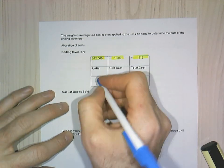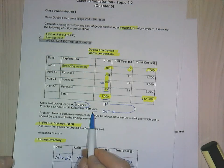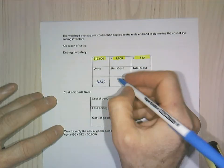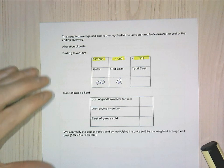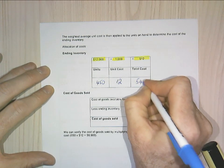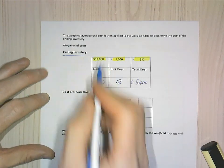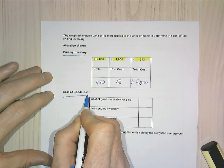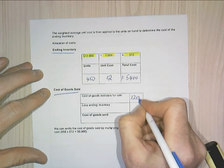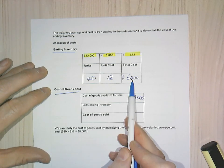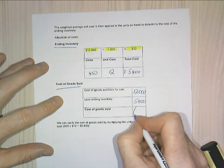Applying that: from the previous page I have $12,000 across 1,000 units, so $12 is my average cost. Ending inventory was 450 units. At a unit cost of $12 each, my ending inventory is $5,400. To calculate cost of goods sold: cost of goods available for sale is $12,000, less ending inventory of $5,400, giving cost of goods sold of $6,600.